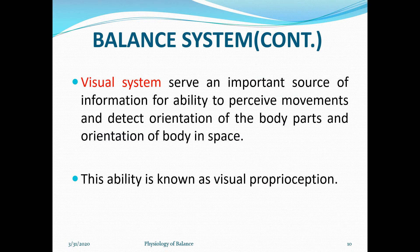Vision serves as an important source of information for the ability to perceive movements and detect orientation of body parts and orientation of the body in space. This ability is known as visual proprioception — the ability to sense motion with the help of the eyes. Vision gives you how your body is aligned, providing visual feedback for balance.